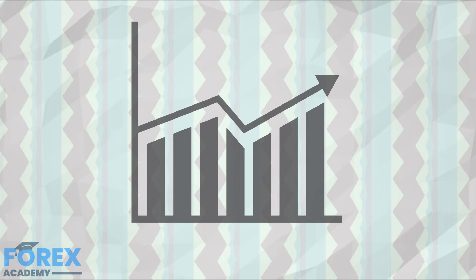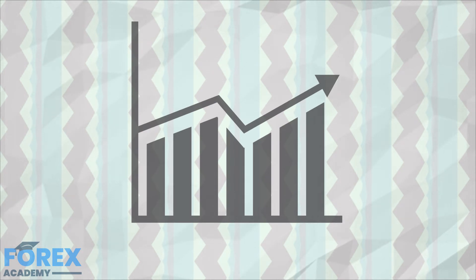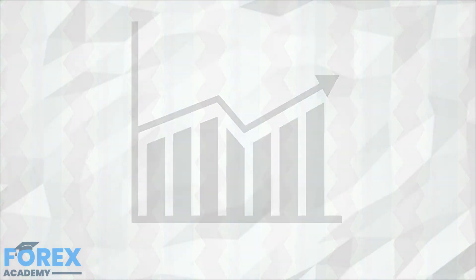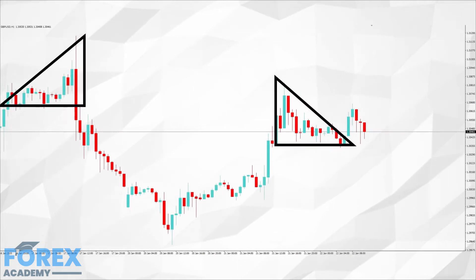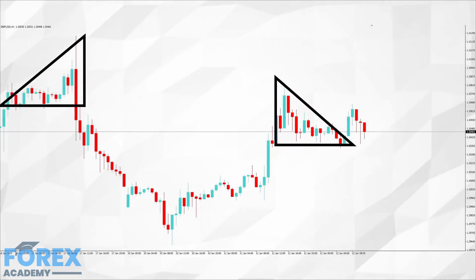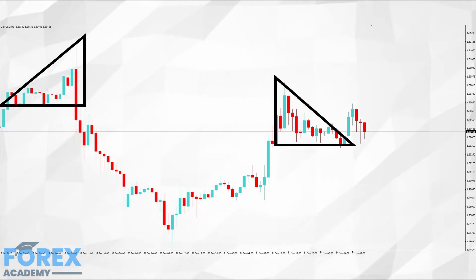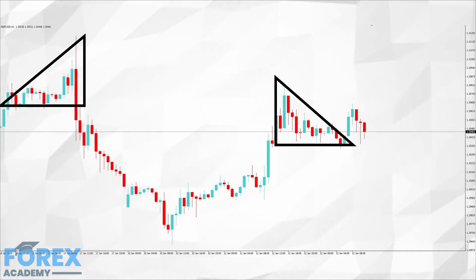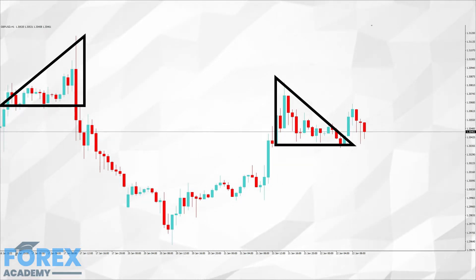Continuing with our theme of looking for reoccurring shapes and patterns in technical analysis, we now turn our attention to Example A, which is a one hour chart of the GBPUSD pair. Here we can see price action without technical indicators, but we have drawn two wedge shapes on our chart. The wedge shape pattern on the left began when price action was fairly muted but began to become more volatile throughout the period, with the bottom of the wedge holding firm as an area of support.